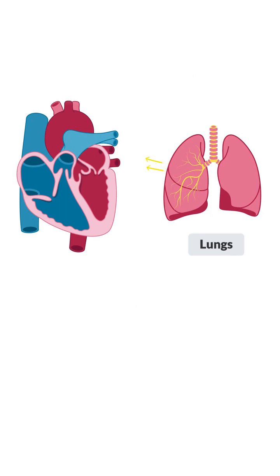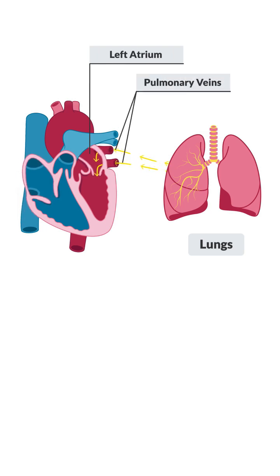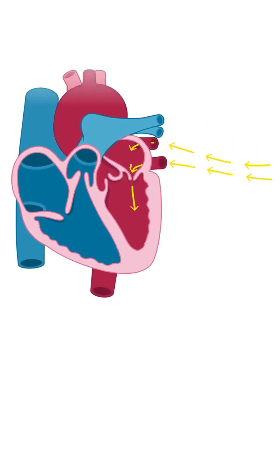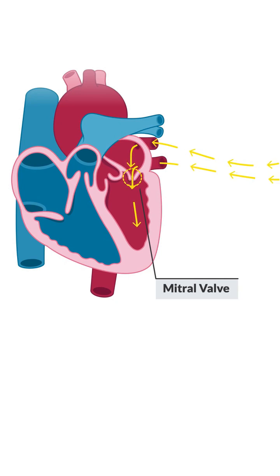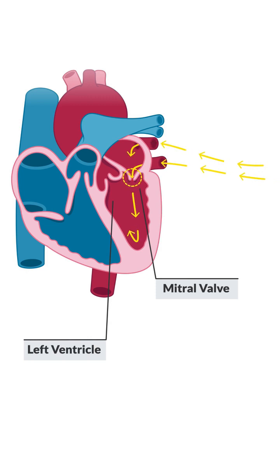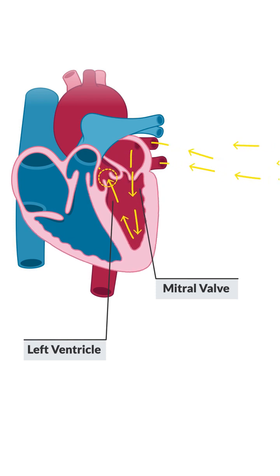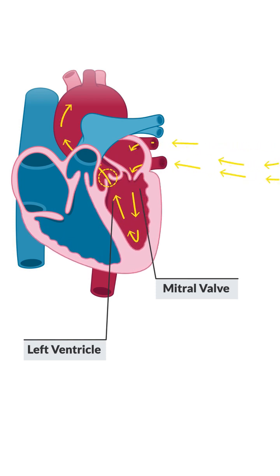The oxygenated blood enters the left atrium, which pumps the blood into the left ventricle through the mitral valve, which prevents backflow. The strong left ventricle contracts, pumping the oxygenated blood through the aortic valve into the aorta, the body's largest artery.